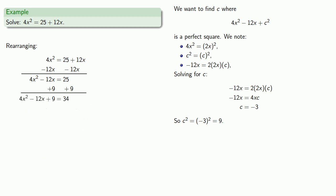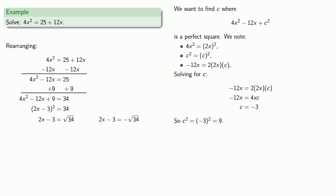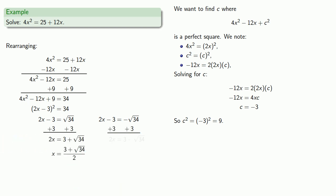On the right hand side we get 34. On the left hand side, we get the square of 2x plus c, which is the square of 2x minus 3. Now the equation is in the form square equals number, so 2x minus 3 is either the principal square root of 34 or negative the principal square root of 34. We can solve these two equations separately, giving us two solutions.